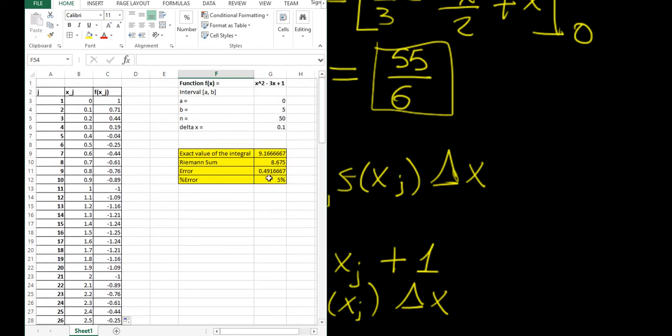Well we've reduced the error to 5% by increasing the number of rectangles by five, so that's quite good. We can see that the value here is getting a lot closer to the exact value.